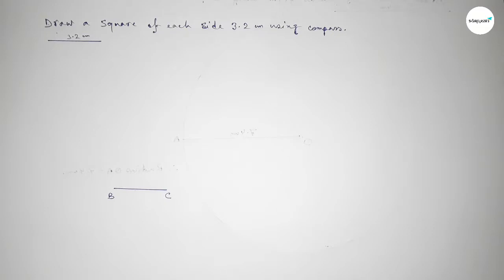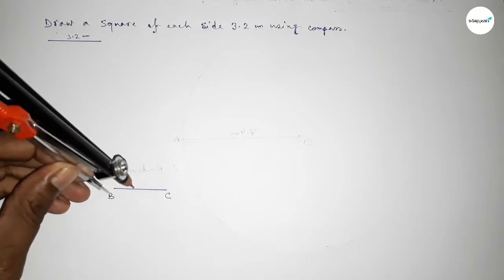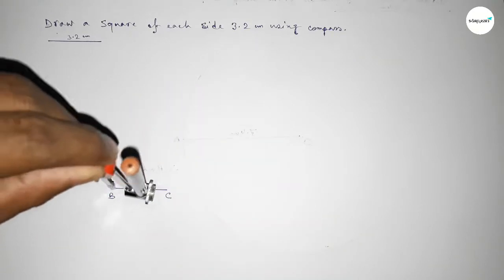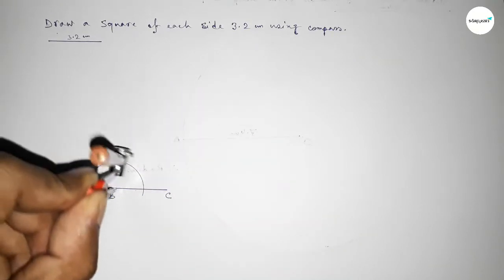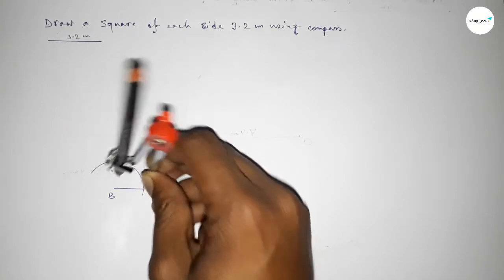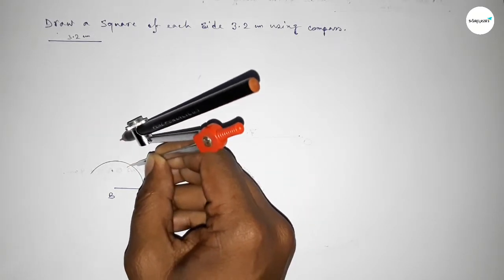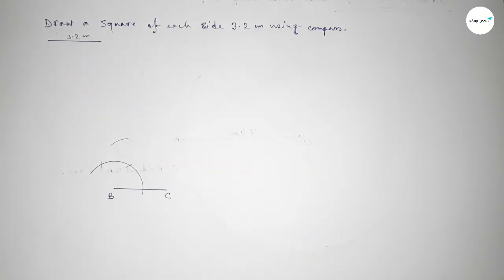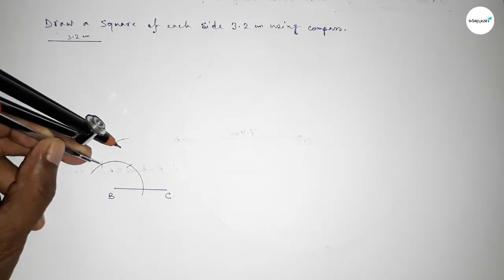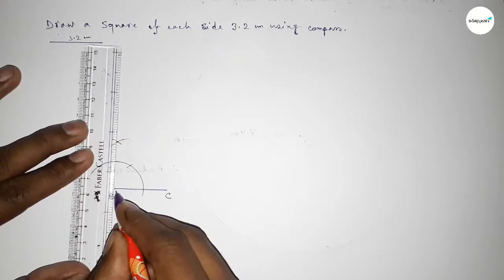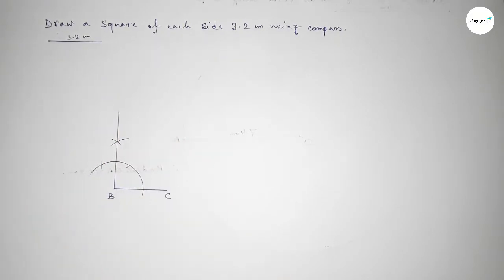Now we have to draw a 90 degree angle at point B. Putting the compass on point B and taking any length, drawing an arc. Then putting the compass on that arc and taking the same length, cutting here. Putting the compass again and cutting here, drawing another arc with the same length. Both curves intersect at a point.